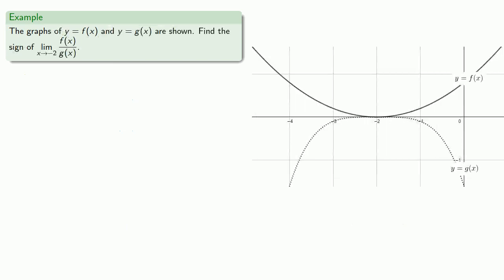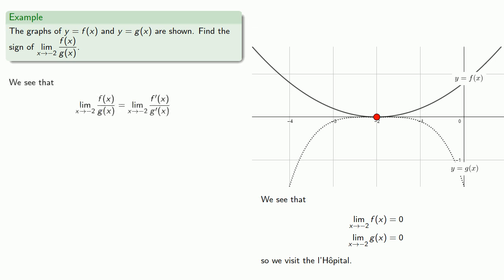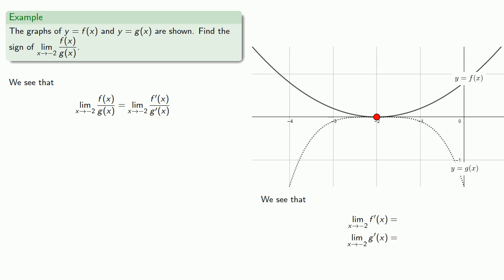In some applications, we might only care about the sign of the limit. We see that as x approaches negative 2, f of x and g of x both go to 0, so we apply L'Hôpital's — the limit of the quotient of the functions is the limit of the quotient of the derivatives, provided they all exist. We see that the limit as x approaches negative 2 of f prime of x and g prime of x will also both be 0, meaning we actually needed an extended L'Hôpital's stay, so let's differentiate again.